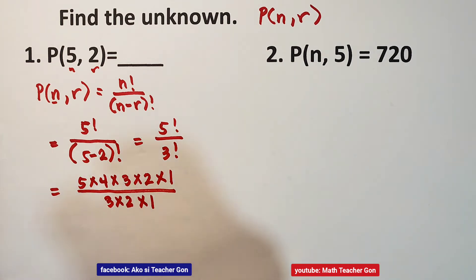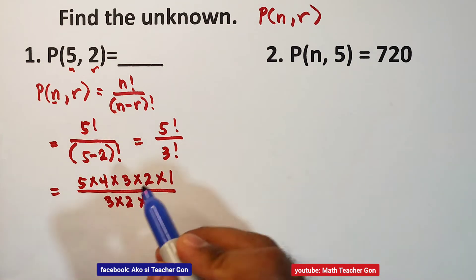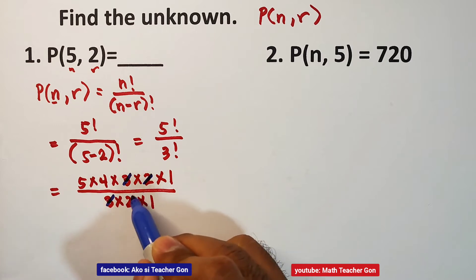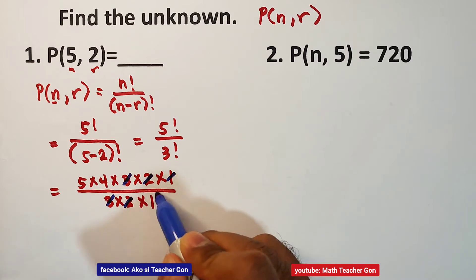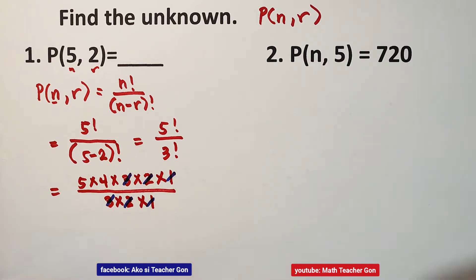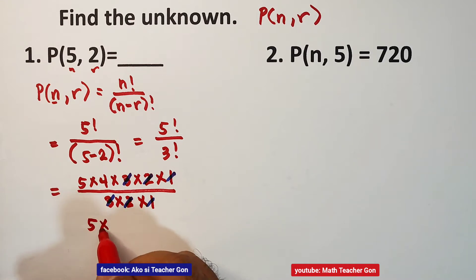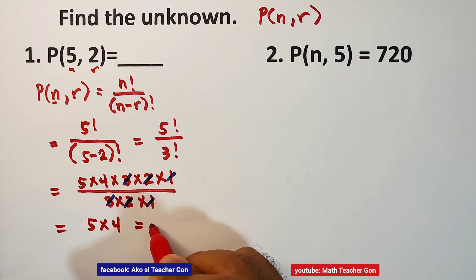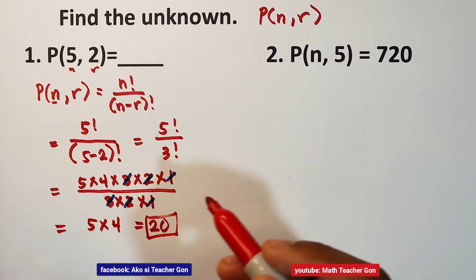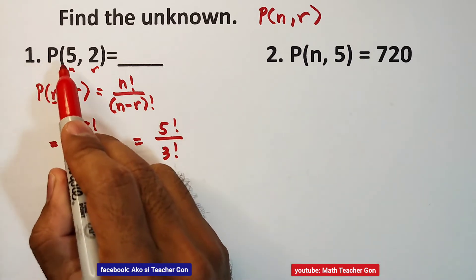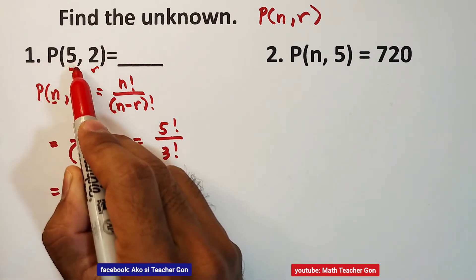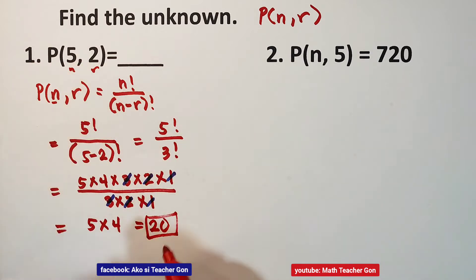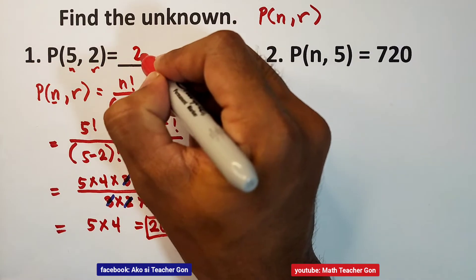Cancel out 3, 2, and 1. The remaining numbers are 5 and 4. So 5 times 4 equals 20. Therefore, permutation of 5 taken 2, or P(5,2), is equal to 20.